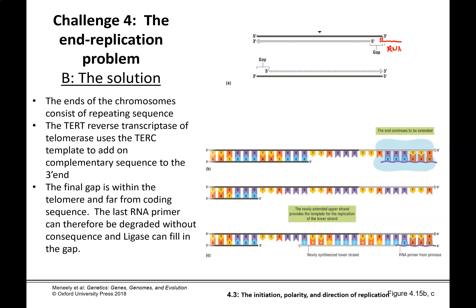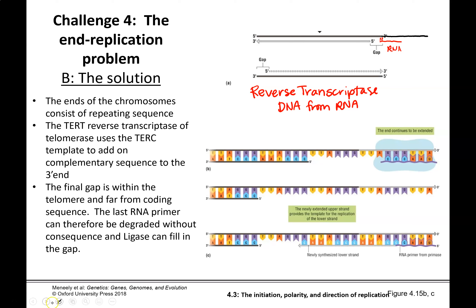Telomerase is an enzyme that is a reverse transcriptase. Reverse transcriptase makes DNA from RNA — you can use RNA as a template to make DNA. This telomerase molecule is going to use the RNA as a template to extend that DNA. And then another telomerase molecule can come along and extend it a little bit more.